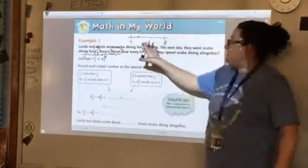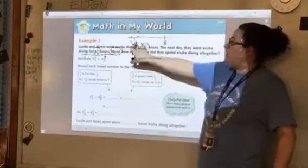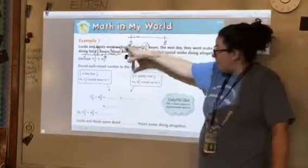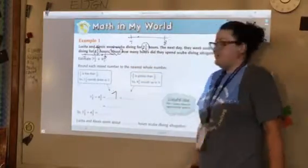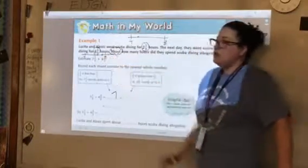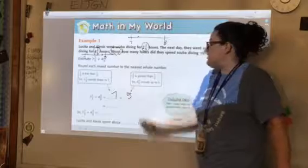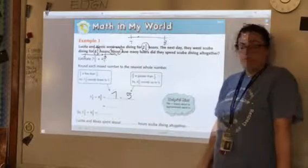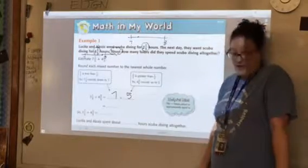Because we're estimating. And just like we did here, we said seven and one-third, well, that's closer to seven. So that's why I'm going to put seven here. And then four and two-thirds, well, that's closer to five. So instead of seven and one-thirds plus four and two-thirds, I'm going to do seven plus five.